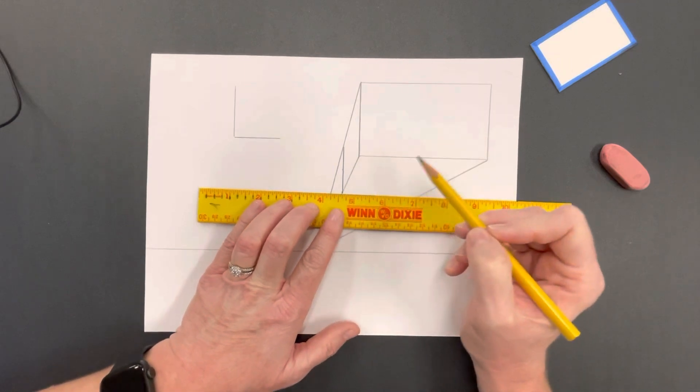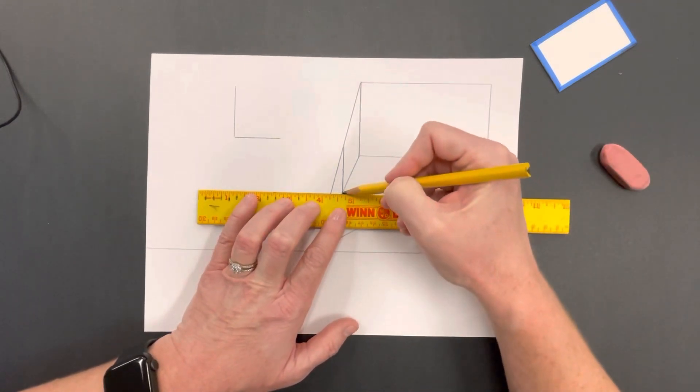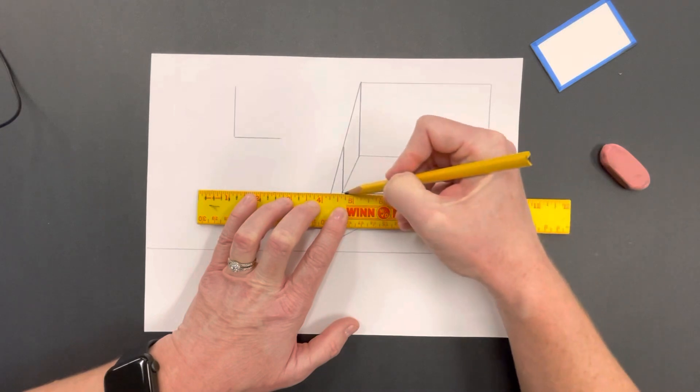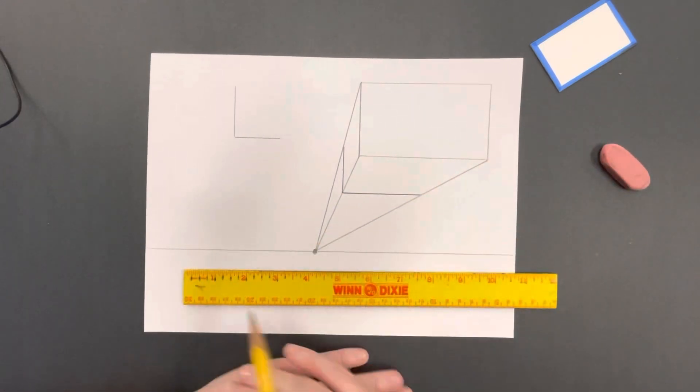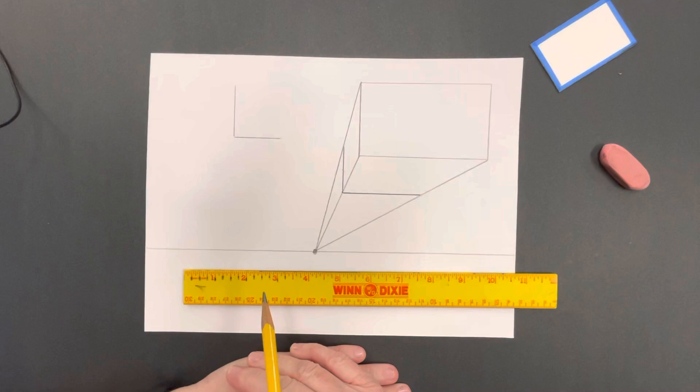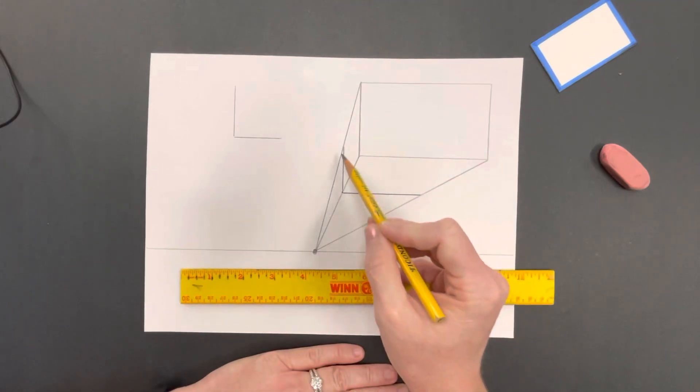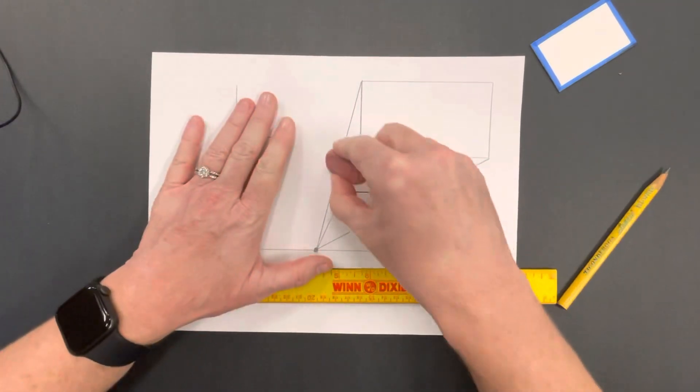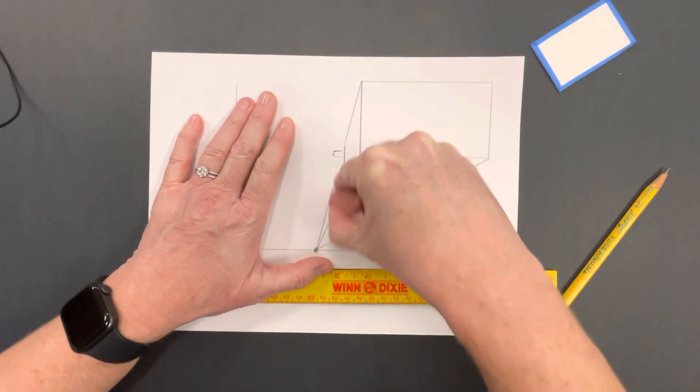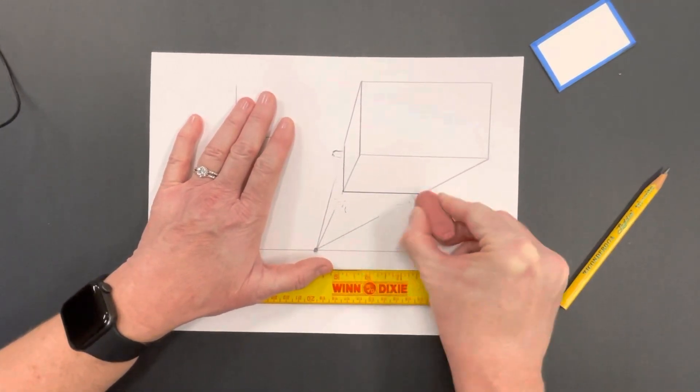So I need to put my ruler horizontal and go across to the other edge and stop. So there's my 90-degree angle right there. And then I can take this eraser and erase part of my orthogonals.